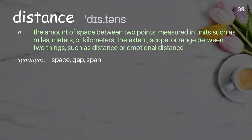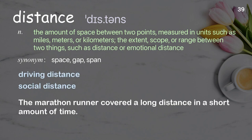Distance: the amount of space between two points, measured in units such as miles, meters, or kilometers; the extent, scope, or range between two things, such as physical or emotional distance. Examples: Driving distance. Social distance. The marathon runner covered a long distance in a short amount of time.